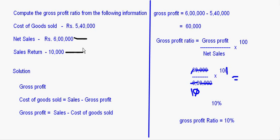In questions where you have been directly given the gross profit and net sales, nothing extra is to be done — just put the figures into the formula. But most questions you will get in your exams will not be straightforward. You will have to calculate the gross profit ratio and find out the figure of either net sales or gross profit. Everything will not be given; you have to derive the amounts from whatever information is provided.